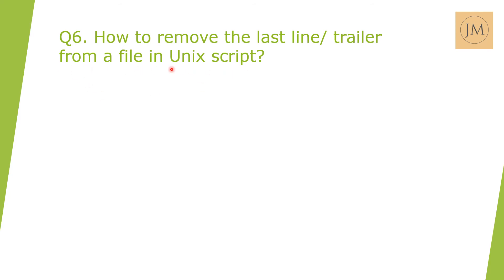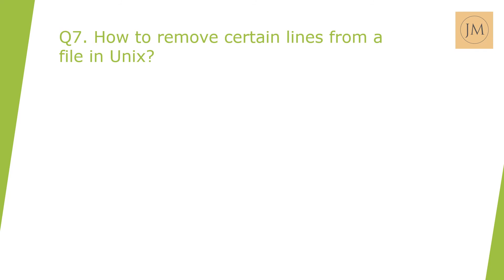Next question: How to remove the last line from a file in Unix scripts, actually modifying the file? The answer is: `sed -i '$d' file.txt`. Dollar represents the last line, 'd' represents delete or remove, and `-i` means edit the same file in place.